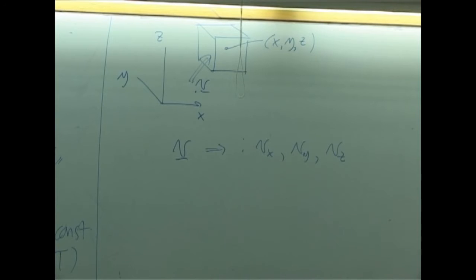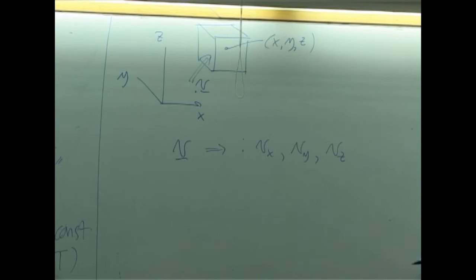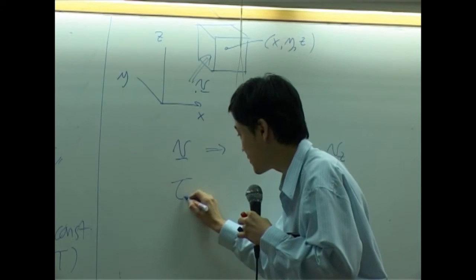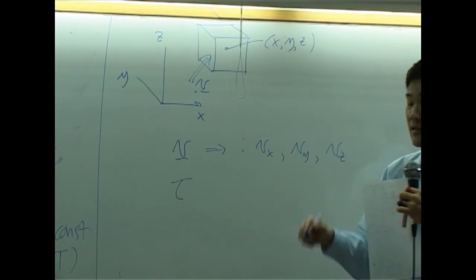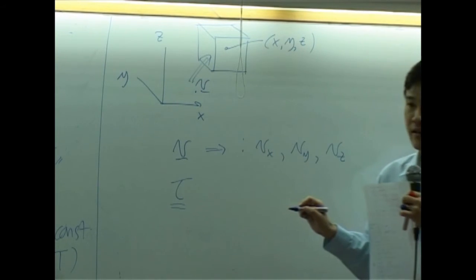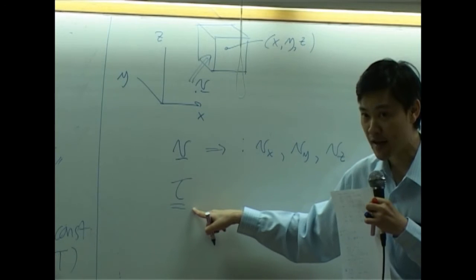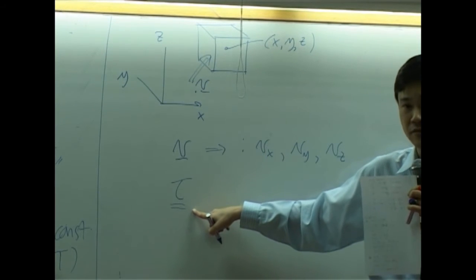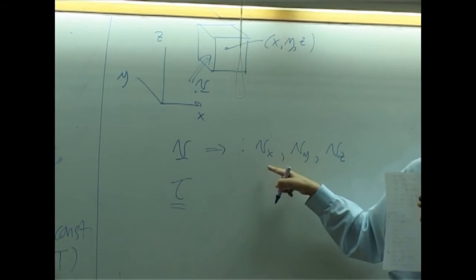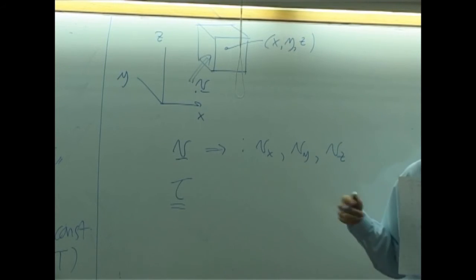For momentum transport, or momentum flux, on the other hand, it is a tensor. And tensor has nine components. So tensor, in this class, I'm going to put two lines underneath. One line means vector. Two lines mean tensor. No line means scalar.